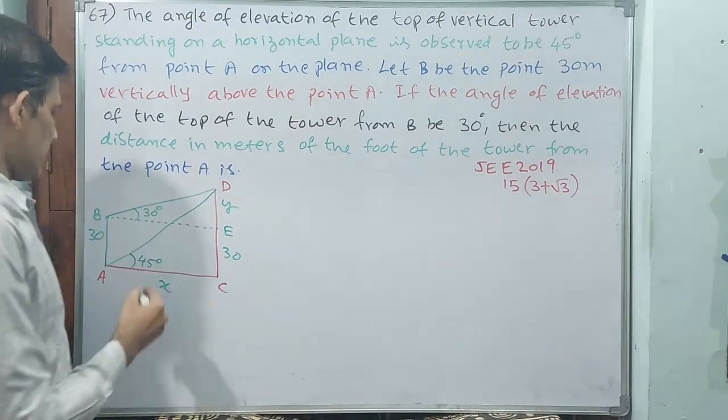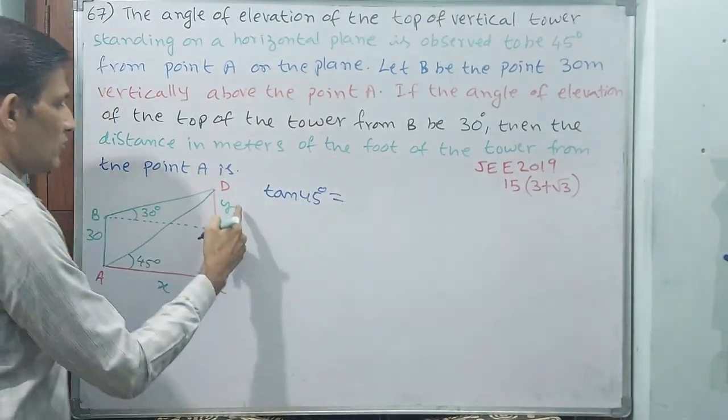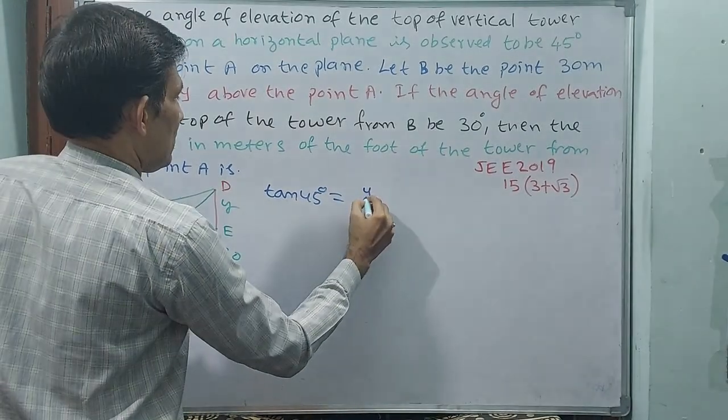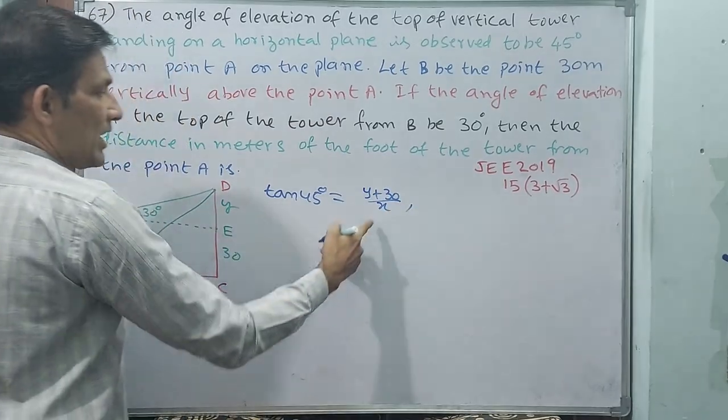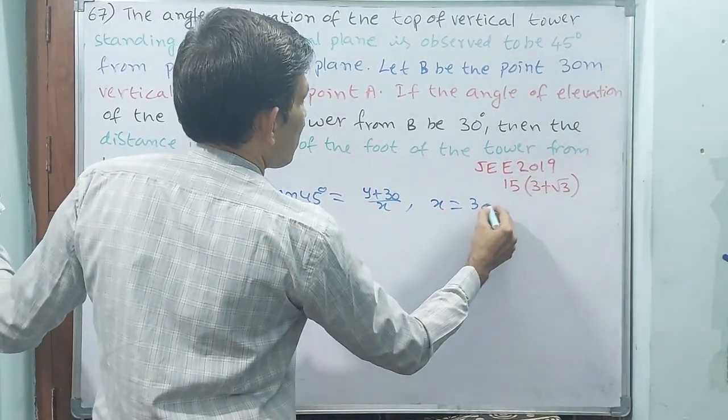Easy, we can find this. Let me see, tan 45 degrees equals (y+30)/x. Or else, tan 45 is 1, so x equals 30+y.